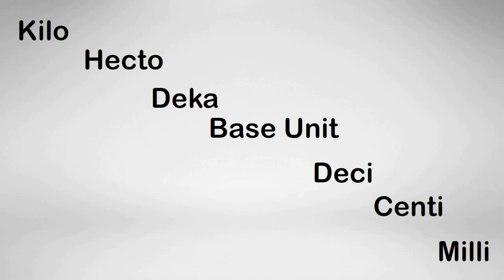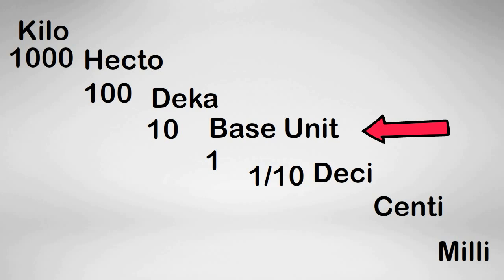Starting at the base unit and moving to the left, the deca would have a value of 10, hecto would have a value of 100, and a kilo of 1000. Next, if you start at the base which would have a value of 1 and move to the right, a deci would be 1 tenth, centi is 1 hundredth, and milli is 1 thousandth.